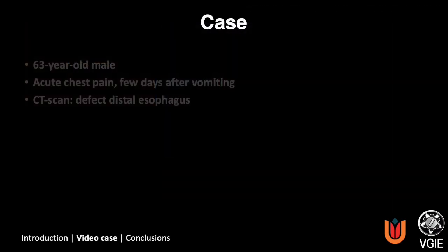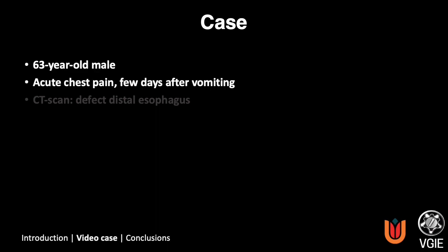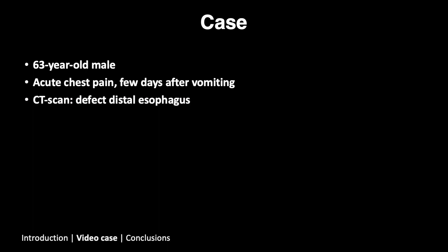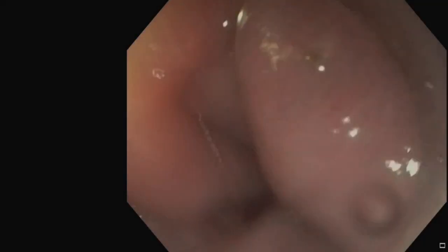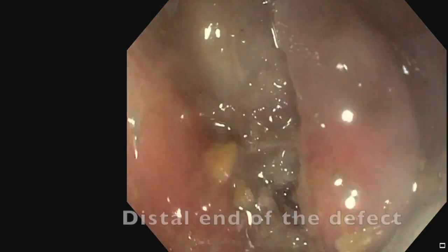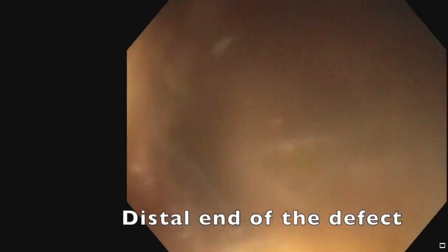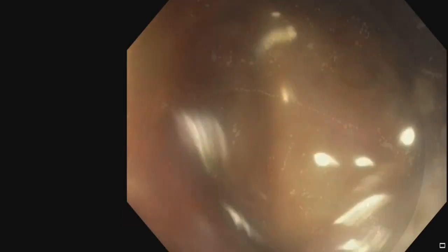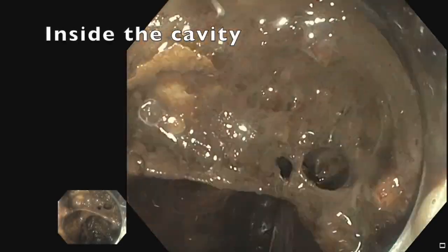In this case, we present a 63-year-old male who was admitted with acute chest pain after vomiting. CT scan showed a defect in the distal esophagus, and subsequently an endoscopy was performed. Endoscopy showed a defect of 4 cm in length, with a cavity extending proximally into the mediastinum, filled with debris.